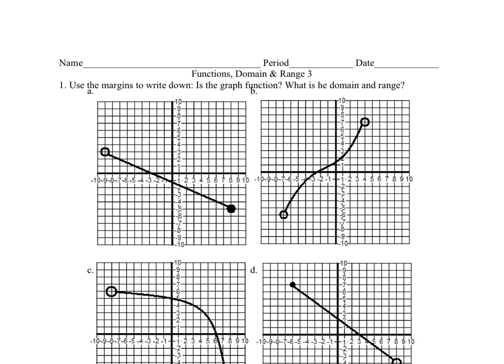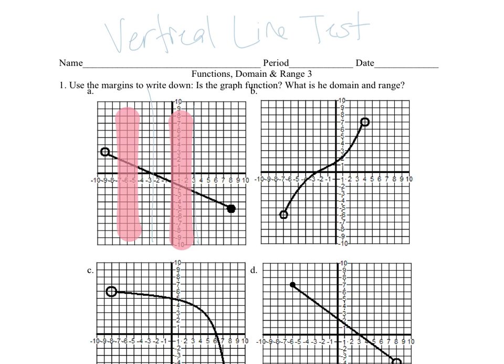We can also assess whether a graph of a relation is a function. One condition was that every input has an output and there's only one output for every input. On a graph, outputs are y-values and inputs are x-values. If there are two y-values for one input, the graph would double back on itself. So we can use what's called the vertical line test: if we draw a vertical line anywhere on the graph, it can only cross the graph in one spot.